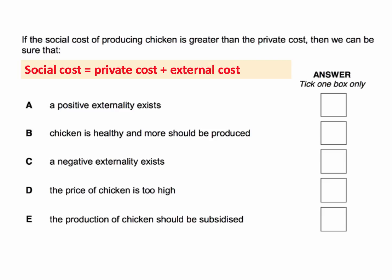So we can go through the answers. A must be wrong — a positive externality creates a situation where there are external benefits rather than external costs. Option B, chicken is healthy and more should be produced — that relates to chicken being a positive good in terms of consumption, perhaps healthy eating. That's wrong.